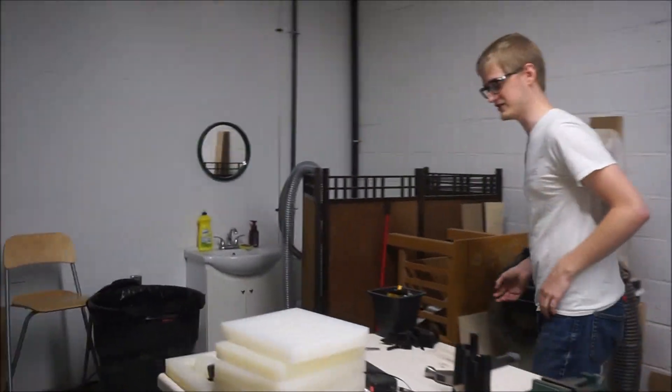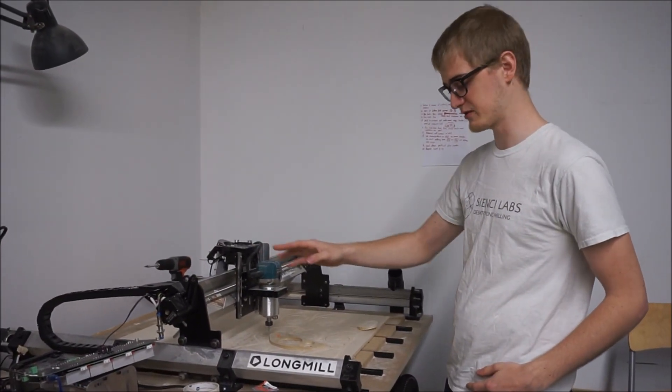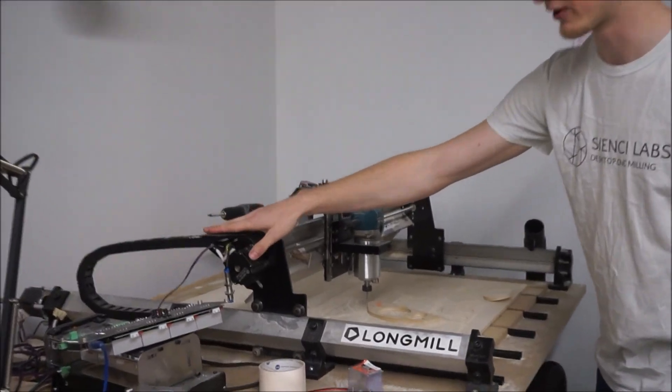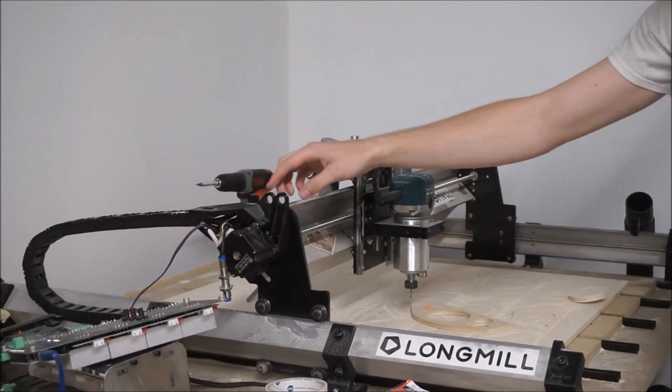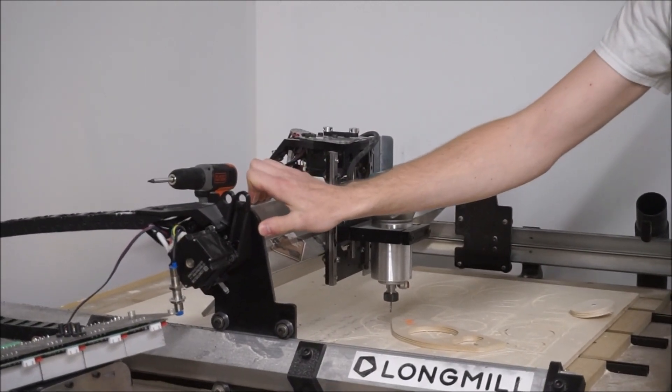Actually, I'll take you over to the machine first. So, on the longmill, we've got a couple 3D printed parts. Most of them are non-structural, like parts that support the drag chain or they're used for alignment, like aligning the aluminum rail into the steel gantry.